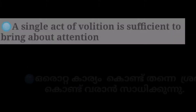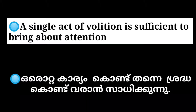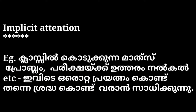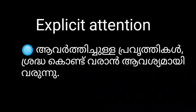In implicit volitional attention, a single act of volition is sufficient to bring about attention. In explicit volitional attention, we need repeated acts of will to sustain it. For example, when a child is assigned mathematical sums in class and is warned by the teacher of punishment if the work is not done, a single act of will makes him attend to the task — this is implicit volitional attention. In explicit volitional attention, one has to struggle hard to continue being attentive, requiring strong willpower and strong motives to accomplish the task.